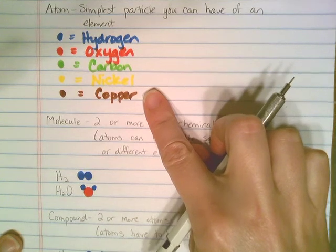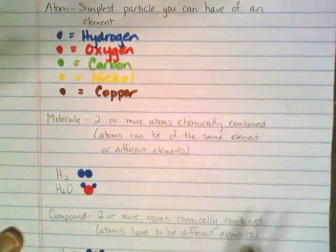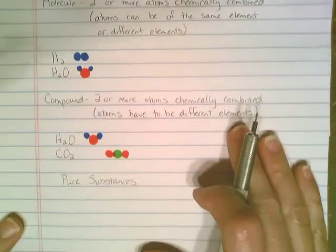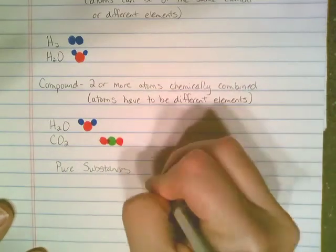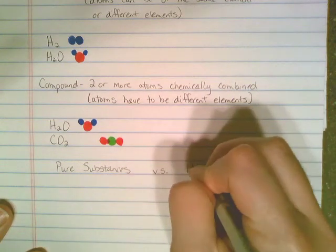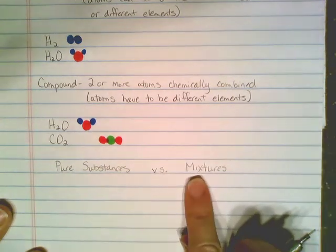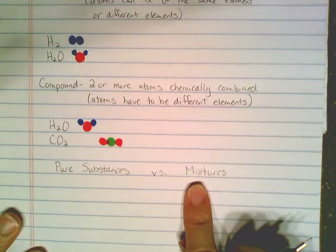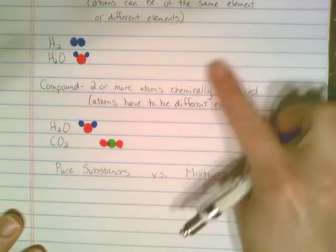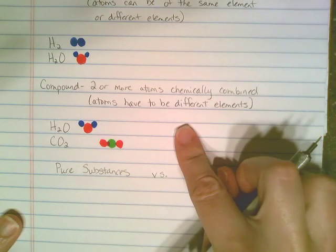The opposite of a pure substance, what we're going to be talking about next, would be some kind of mixture. Mixtures are when we start to combine some of the things we have listed above together in one container.